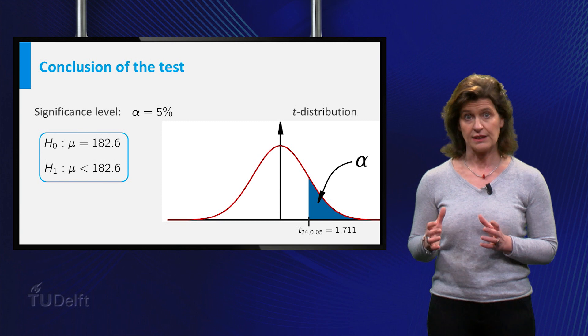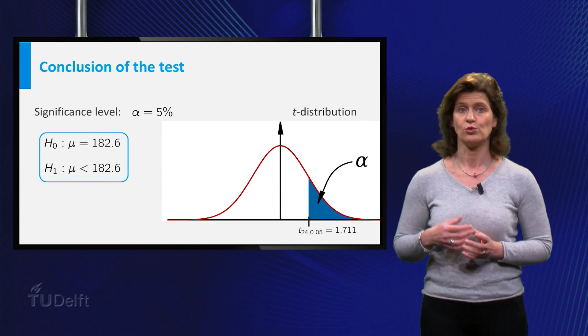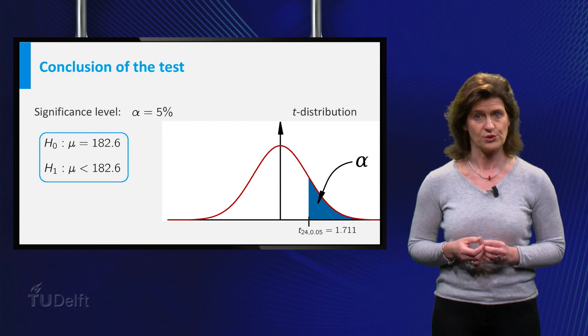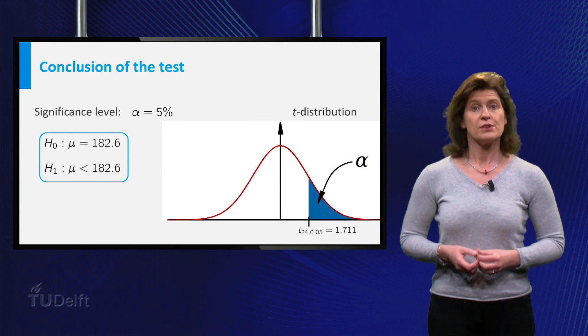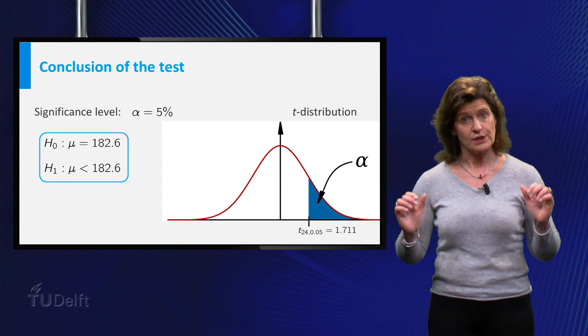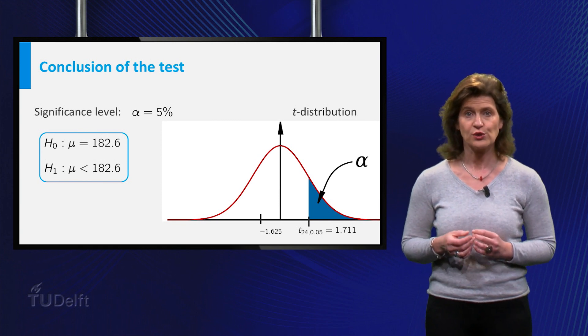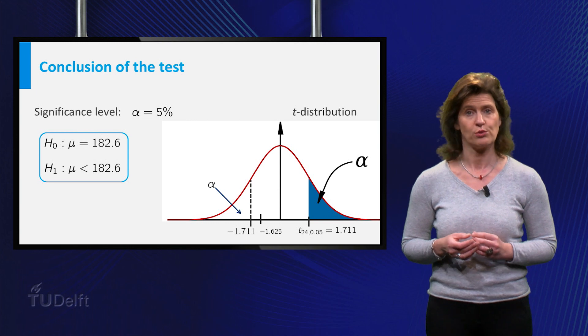Because the test is one-sided, you need to take the critical value of the t-24 distribution at alpha equal to 0.05. Because the t-distribution is symmetric, you compare the value of your test statistic to the left critical value minus 1.711.